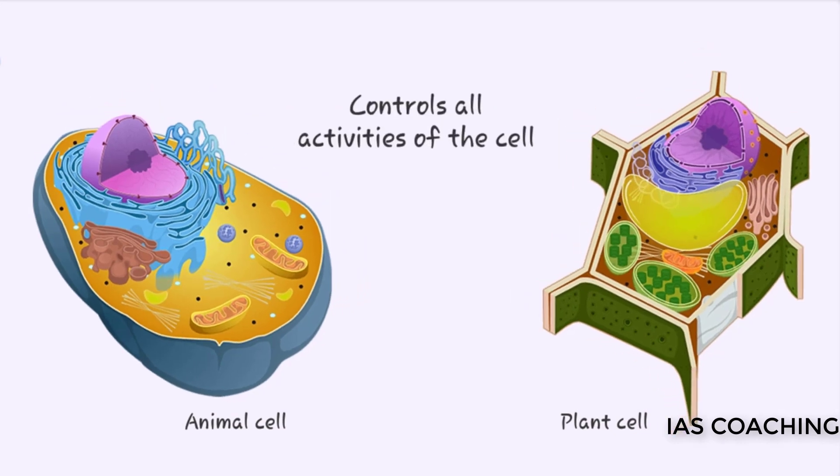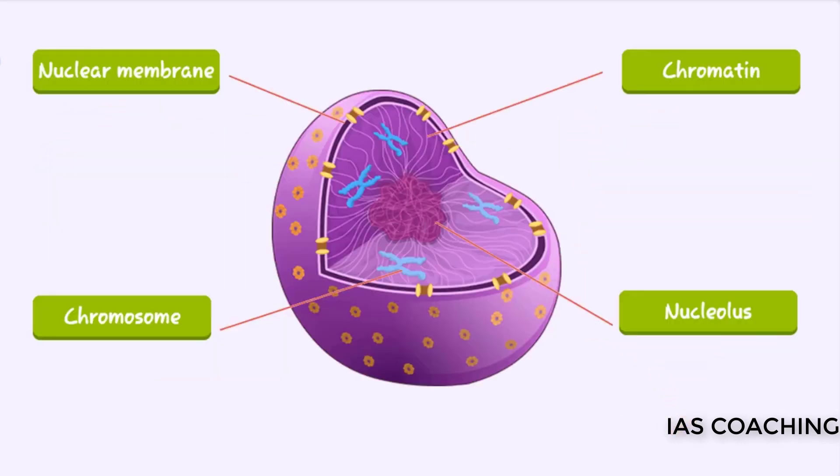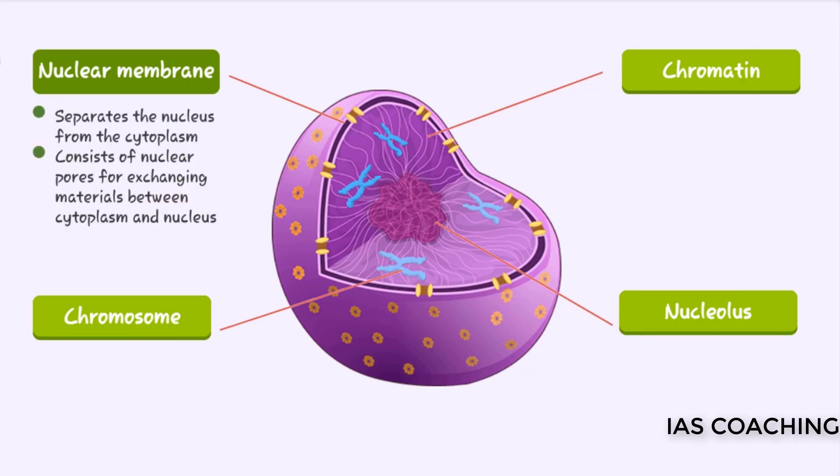It acts as the control center for the activities of the cell. The nucleus is separated from the cytoplasm by a membrane called the nuclear membrane, which bears nuclear pores for exchange of materials between the cytoplasm and nucleus. The thread-like structures you see are chromosomes that contain genes which are responsible for the transmission of characteristics from parents to their offspring.